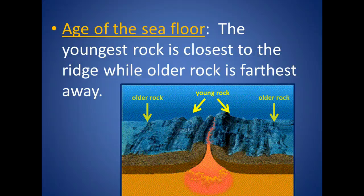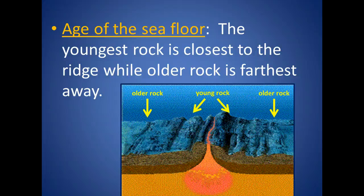One of the reasons that Hess was able to figure out that the seafloor was spreading was because he took core samples of the ocean floor soil and analyzed their age. A core sample is like taking a big hollow drill, drilling it into the earth, pulling it out, and when you open it up, you've got a tube of soil. They analyze the soil to see how old it is. He found that the farther away from the mid-ocean ridge the crust was, the older the rock sample was. He concluded that the older crust was being pushed away from the mid-ocean ridge as younger crust was formed. Go ahead and mark on your picture where the younger rock is and where the older rock is.